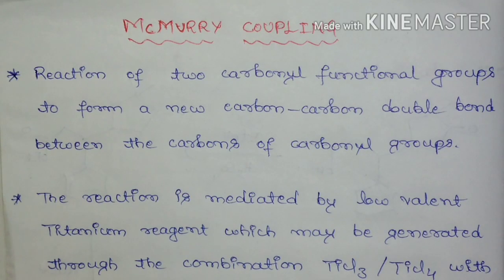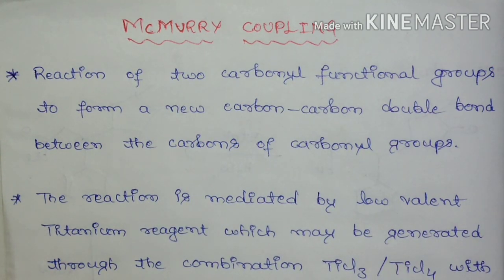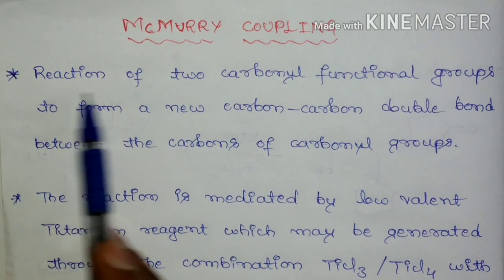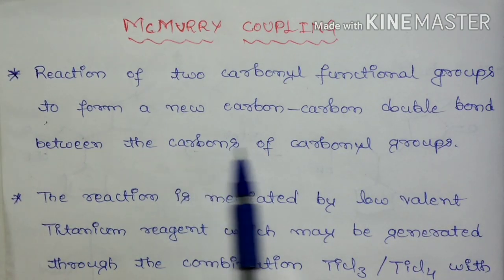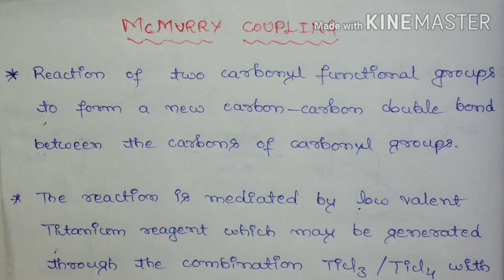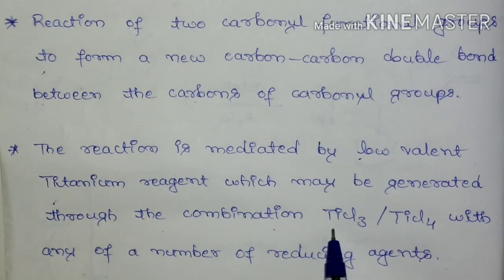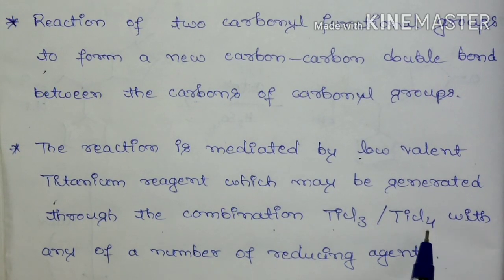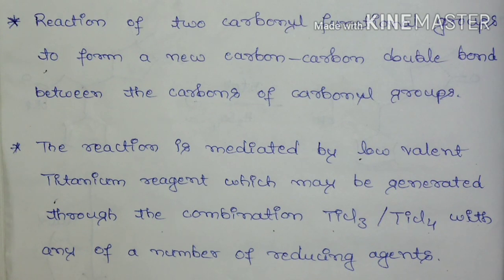Hello students, today I am going to discuss one of the important named reactions, that is McMurray Coupling Reaction. In this McMurray Coupling Reaction, two carbonyl functional groups are going to form a new carbon-carbon double bond between the carbons of the carbonyl group. The reaction is mediated by low-valent titanium reagent, which may be generated through the combination of titanium trichloride or titanium tetrachloride with any number of reducing agents. This reaction is known as McMurray Coupling.